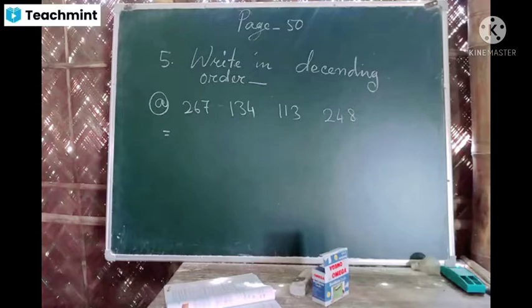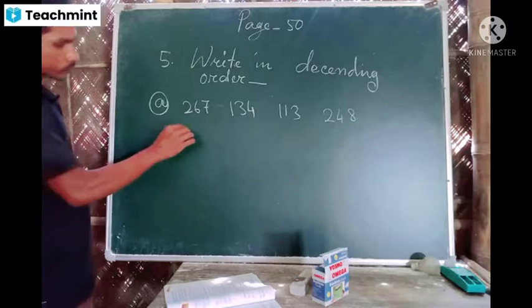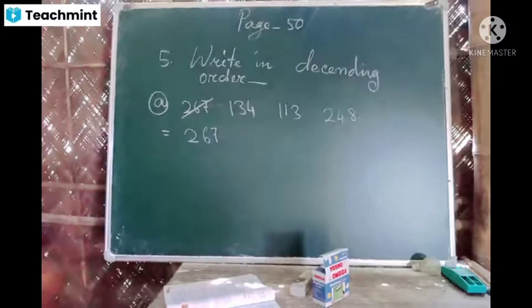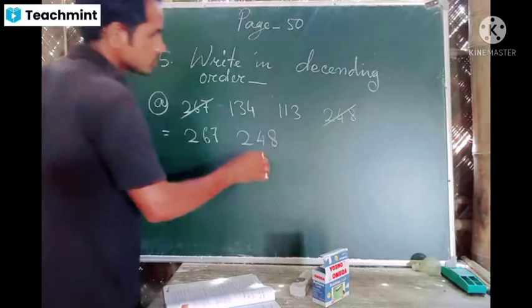248, wrong. 248 is smaller than 267. Very good, 267 is the big number. 248, yes, 248. This one is also finished.